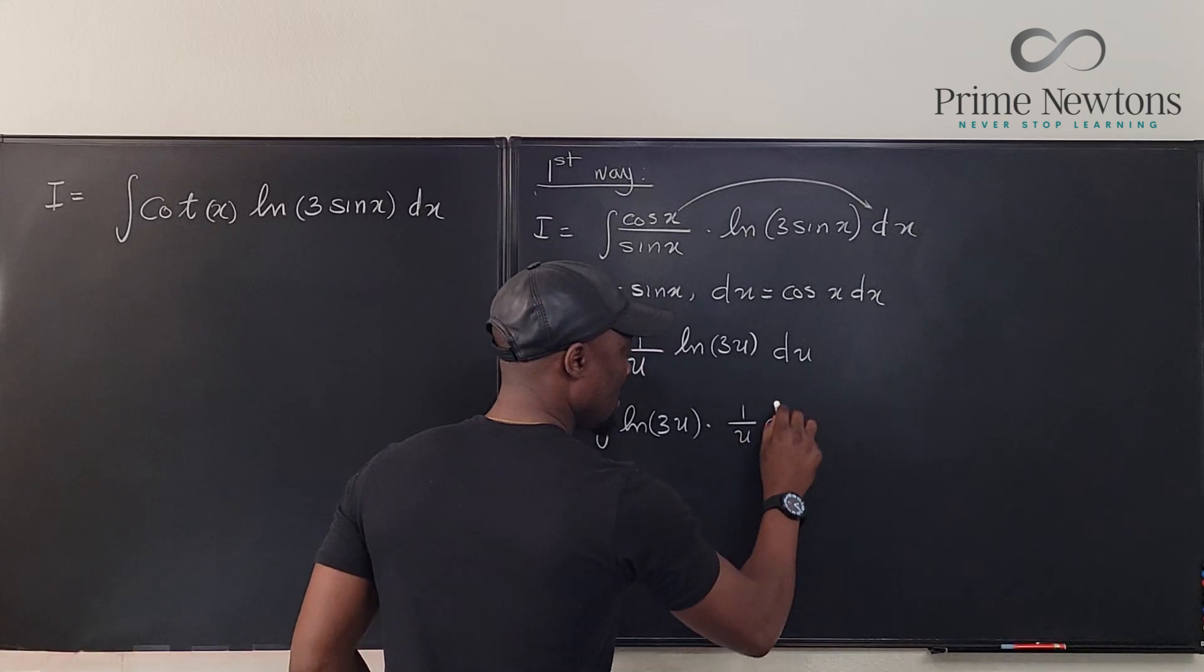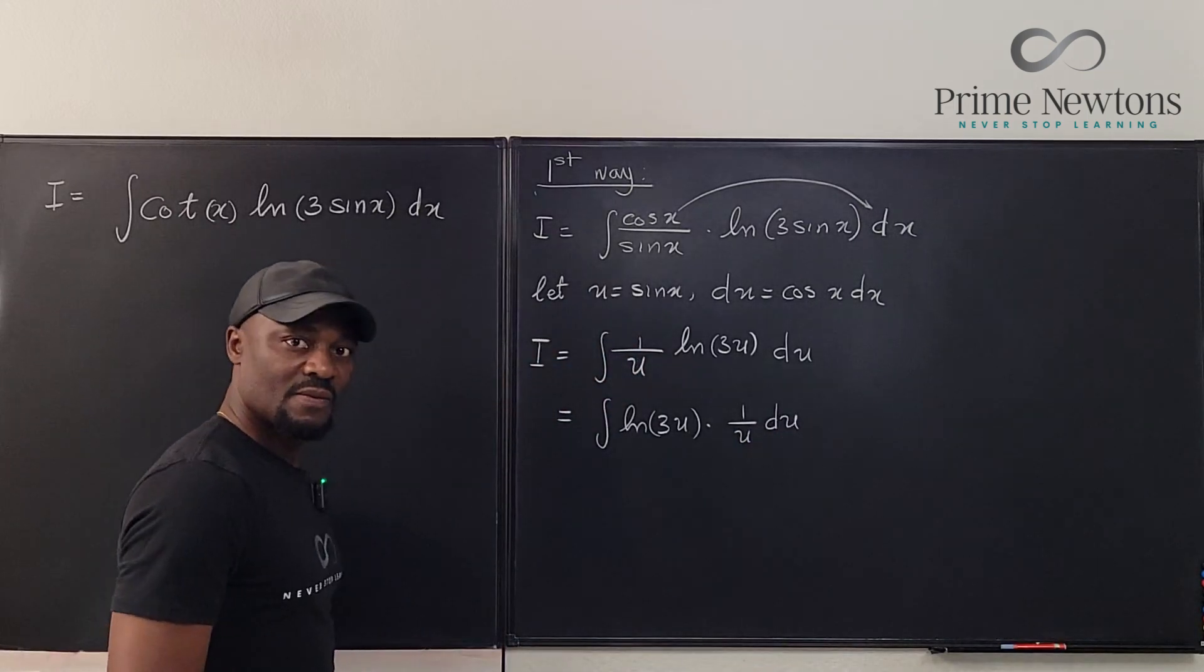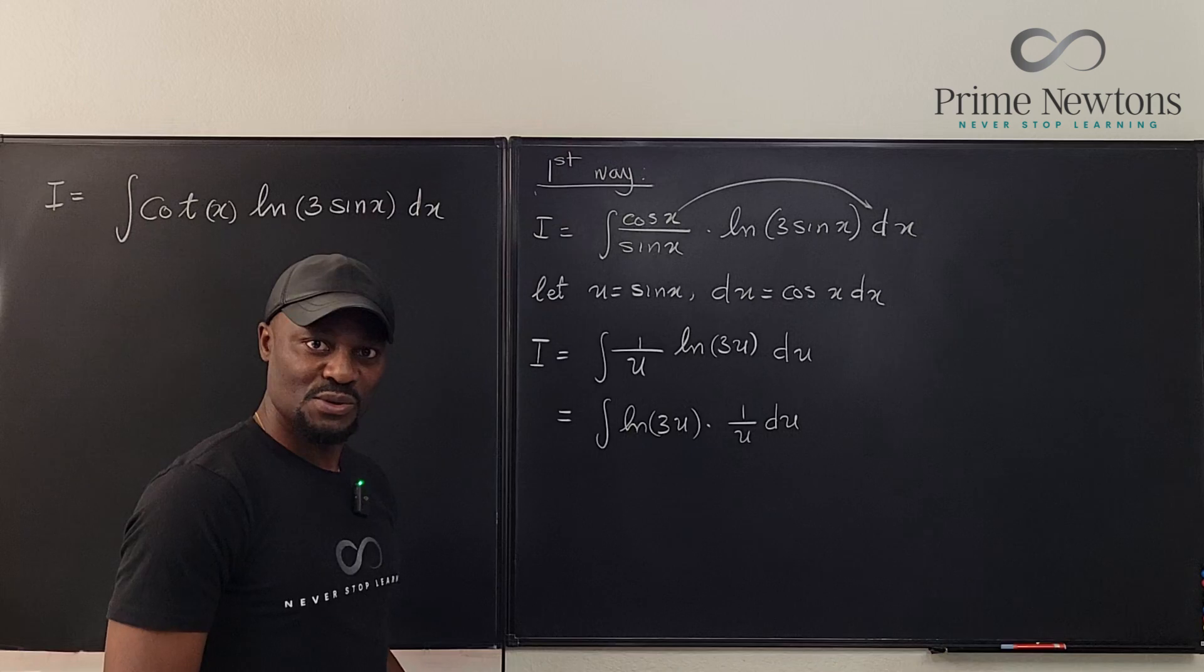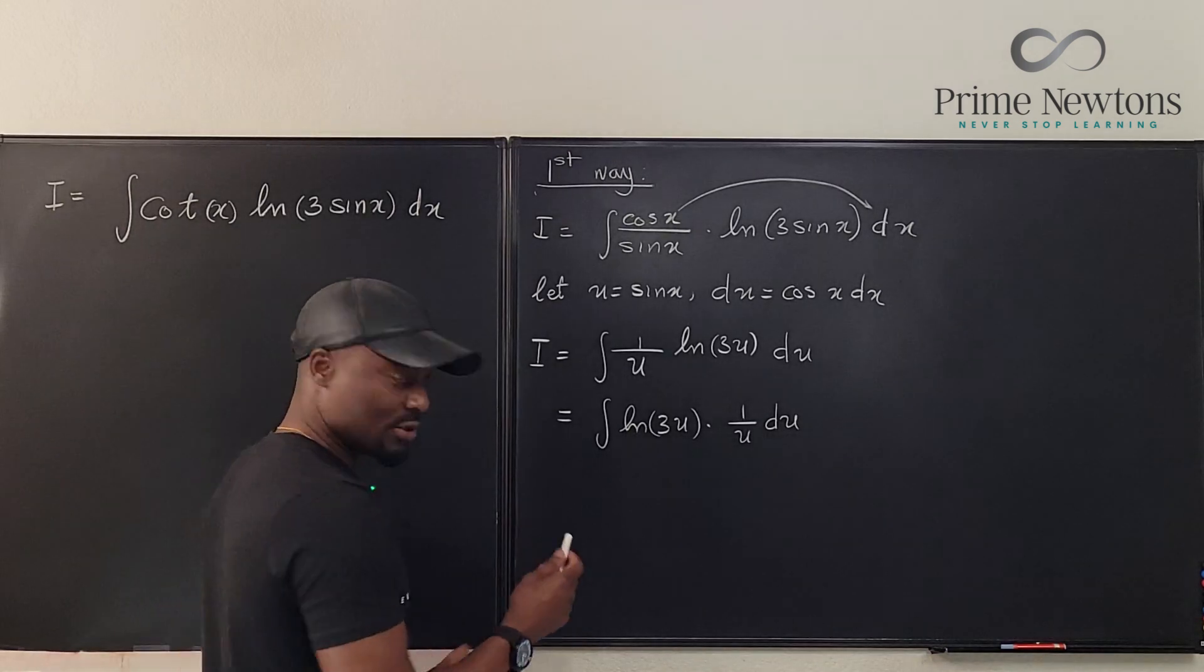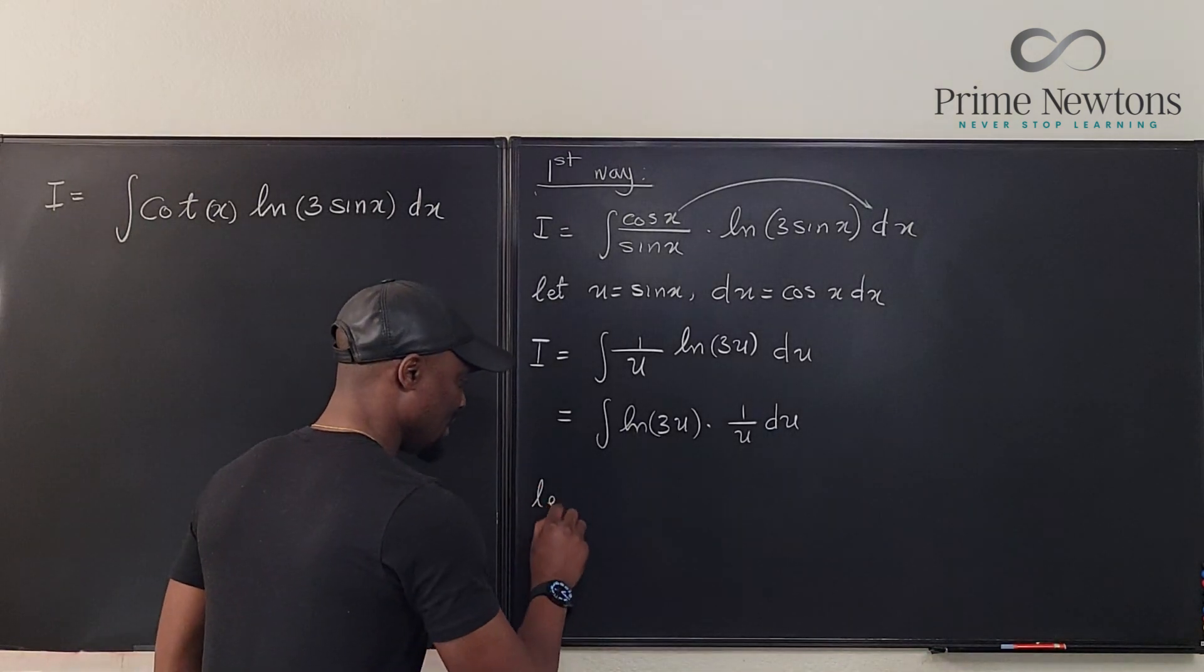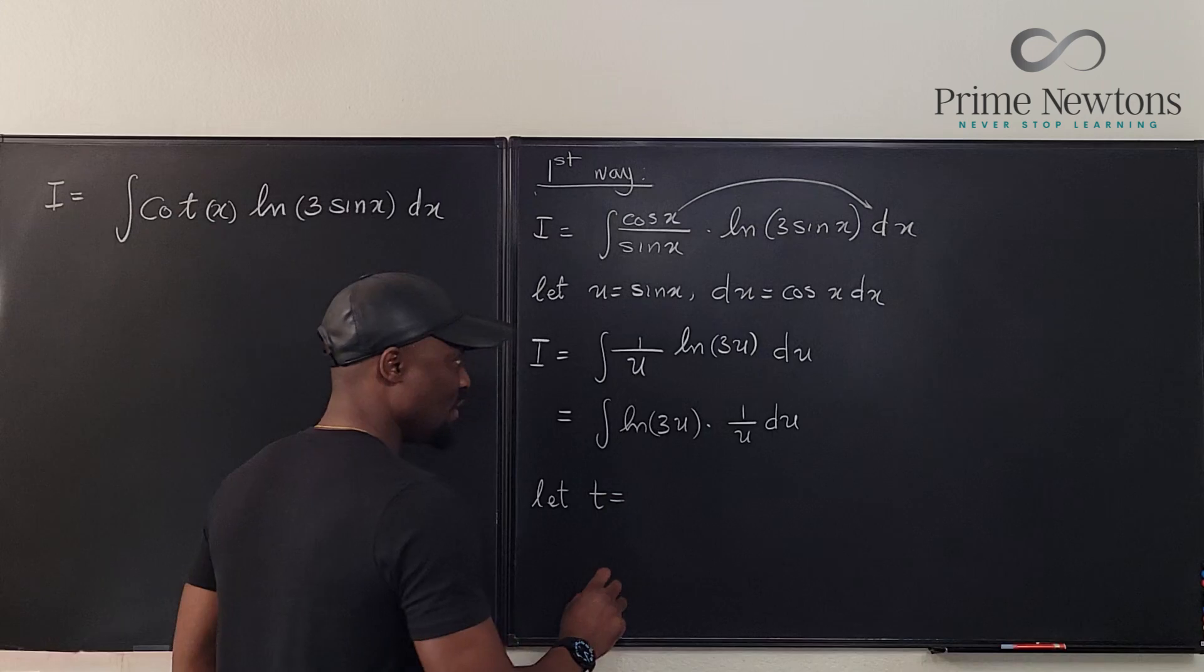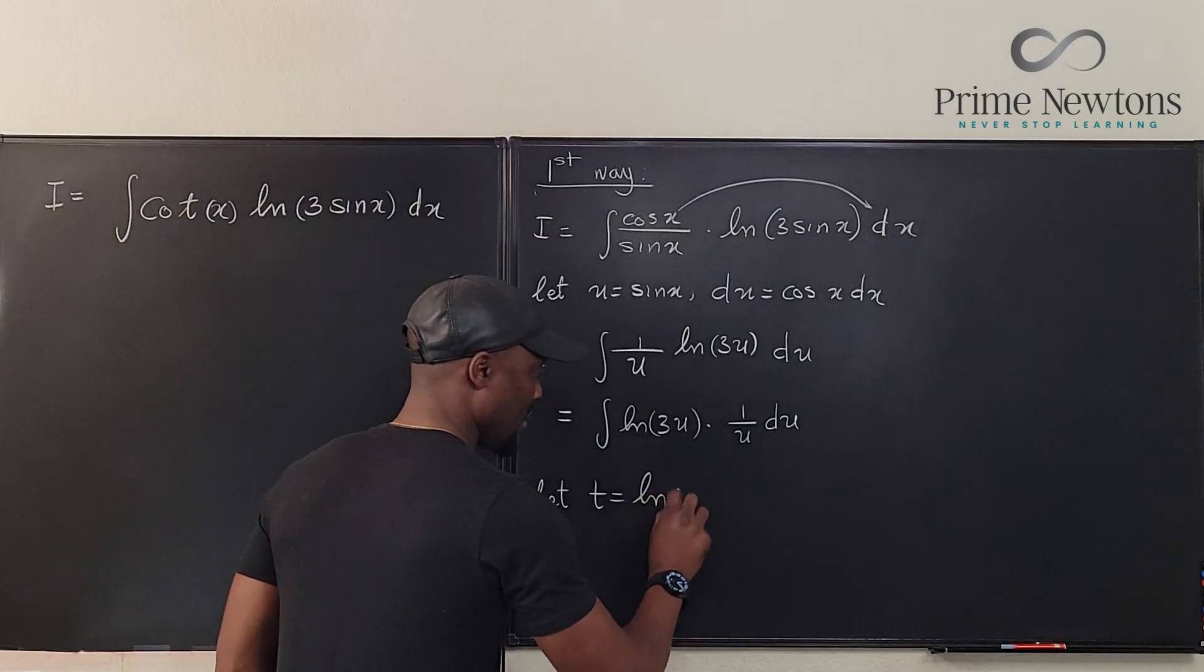This equals the integral of ln of 3u multiplied by 1 over u du. Let's do another u-substitution. Not u now—we're gonna say t. Let t be equal to ln of 3u.